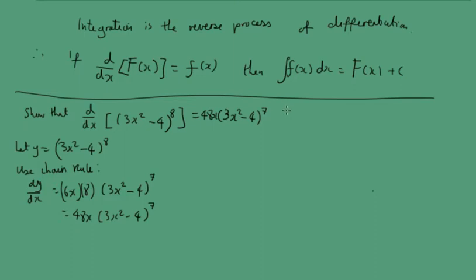Hence, find the integral of 6x(3x² - 4)⁷ dx. Now, let's look at this. We've got (3x² - 4)⁷ and here we've got (3x² - 4)⁷. So far, they're equal.